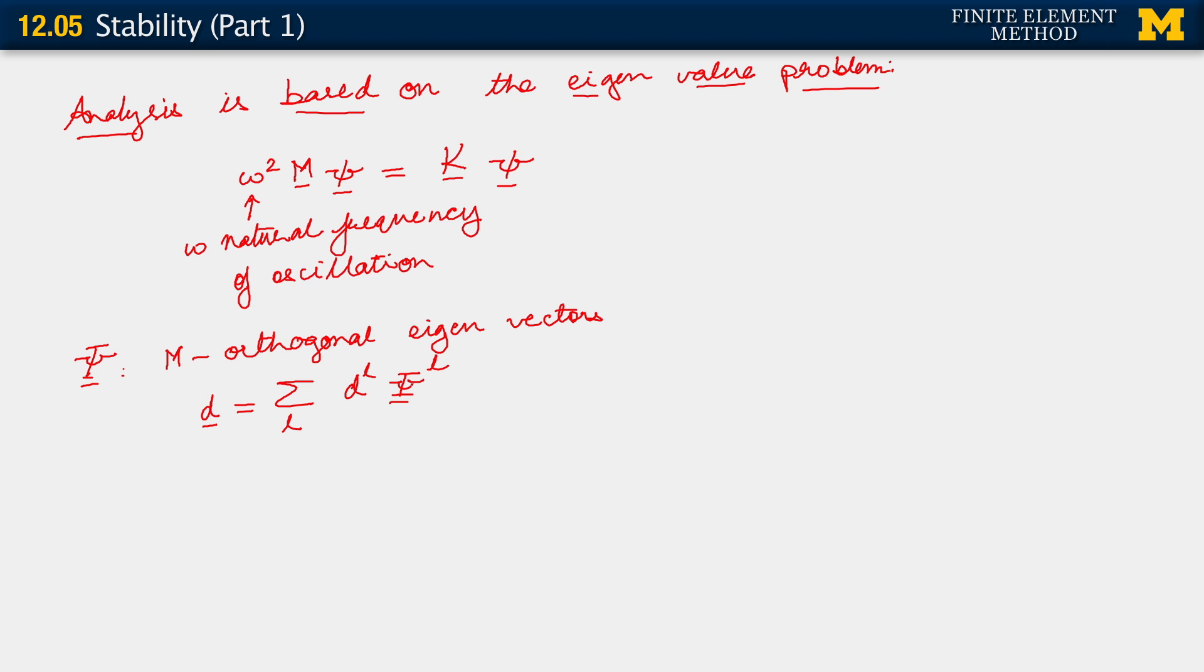These vectors are M orthogonal, where L equals 1 to total number of degrees of freedom in the problem. We do this for D, and of course we can do this for all other vectors that show up in the problem. We could do this for V and A and so on.